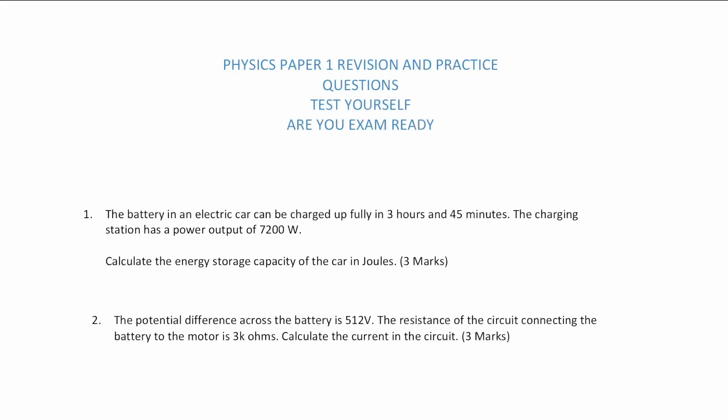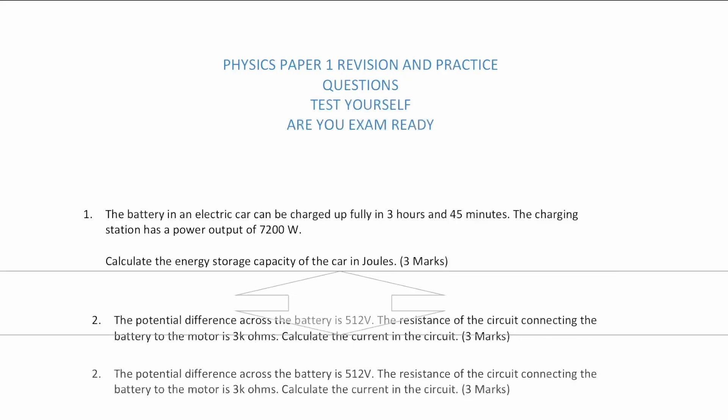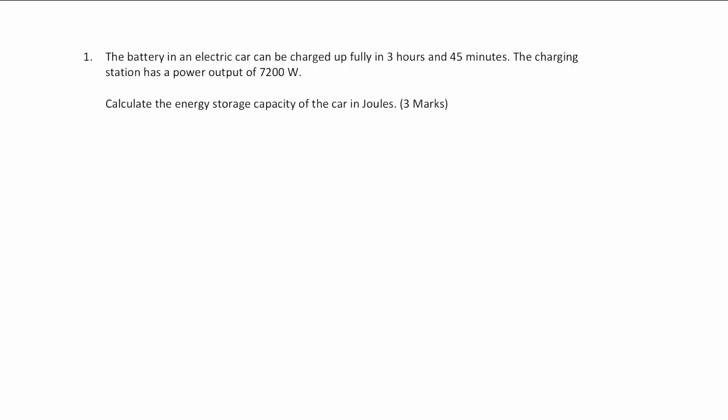Without further ado, let's get into it. The first question is based on a real-life exam paper. The battery in an electric car can be charged up fully in 3 hours and 45 minutes. The charging station has a power output of 7200 watts. Calculate the energy storage capacity of the car in joules. Feel free to pause the video and have a go, and let's get into the solution.